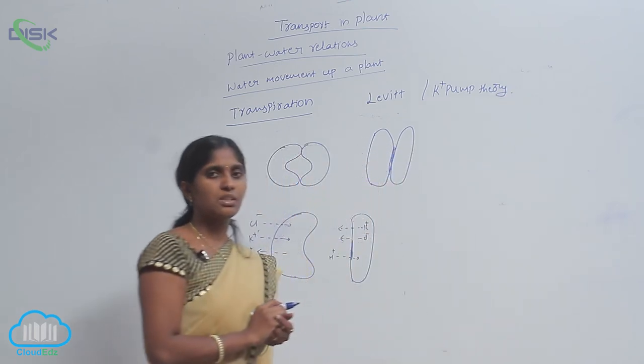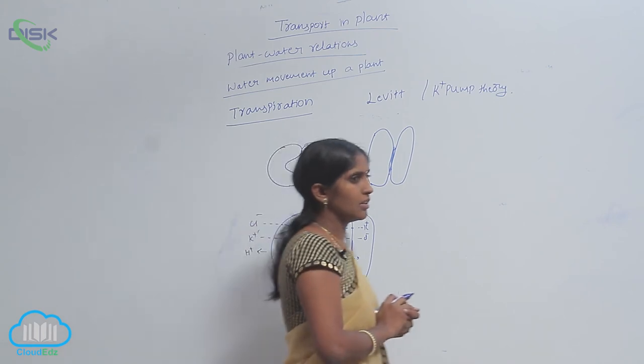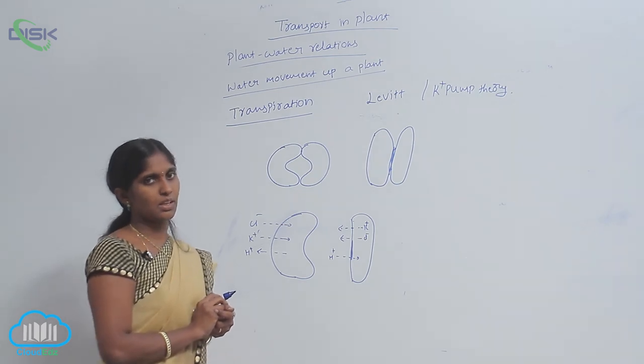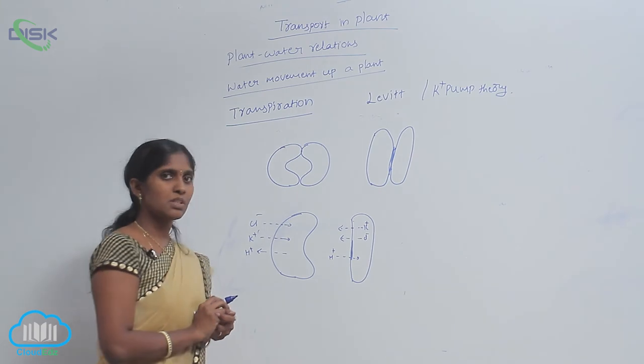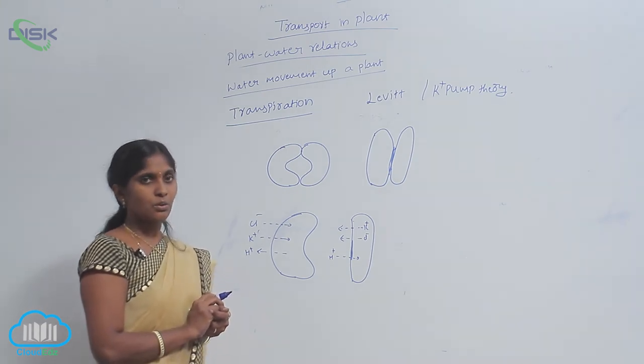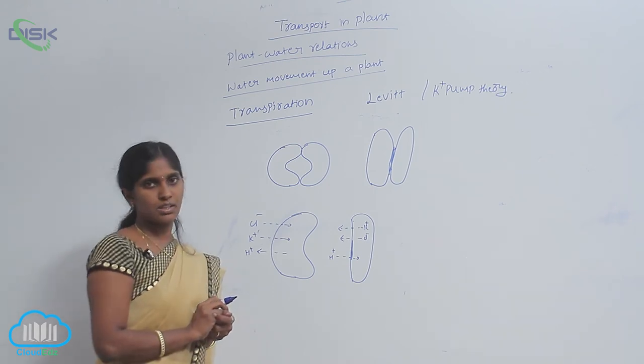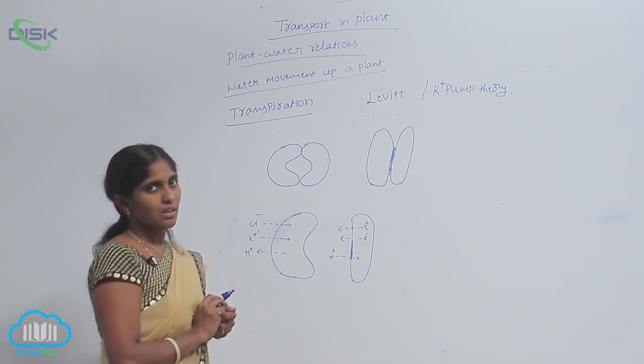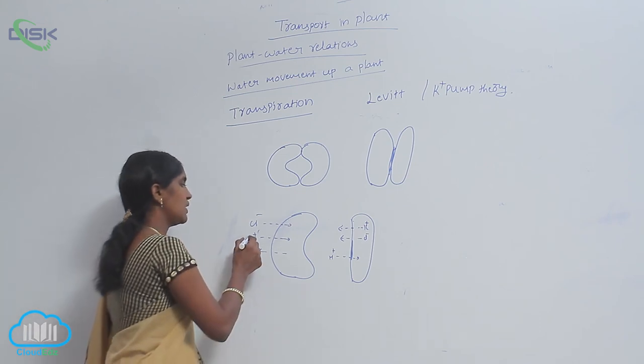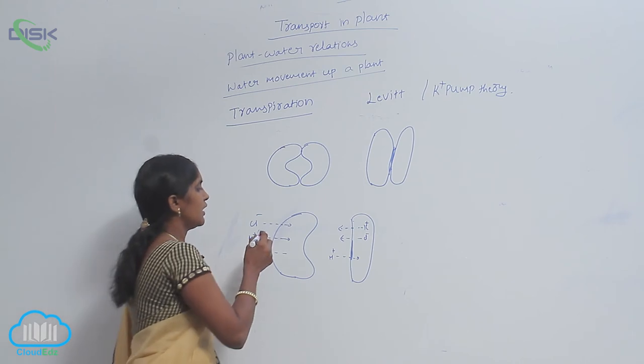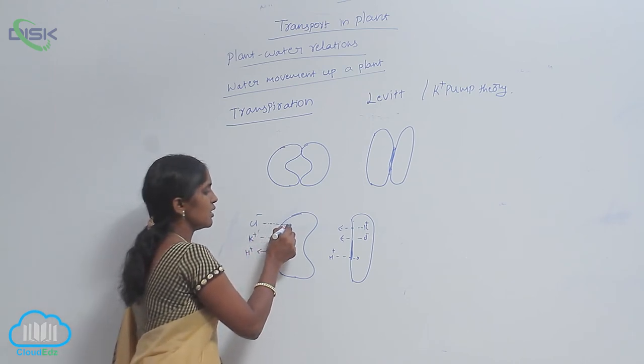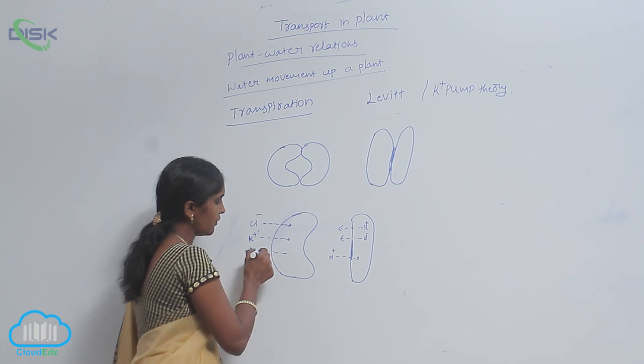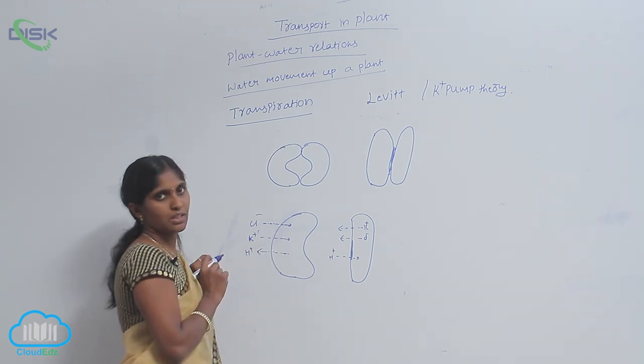According to this theory, the K plus ions are transmitted from subsidiary cells to guard cells. They are accumulated in guard cells. The concentration of the K plus ions increases. Along with that, the influx of Cl minus ions is also carried out.